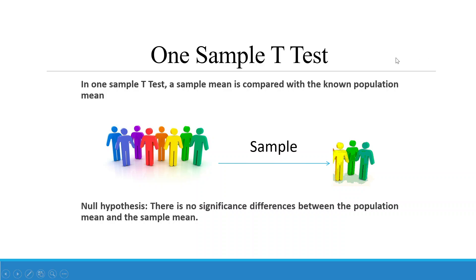Basically, when we are comparing a sample from the population — that is, a sample mean is compared with a population mean — we run a one sample t-test. So here our null hypothesis is there is no significant difference between the population mean and the sample mean. This we have already discussed in the previous video.